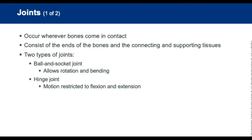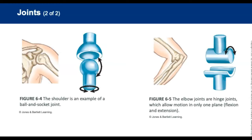Types of joints: the ball and socket joint allows rotation and bending. The hinge joint restricts motion to flexion and extension — bending and straightening. The shoulder is an example of a ball and socket joint, and the elbow and knee are hinge joints.